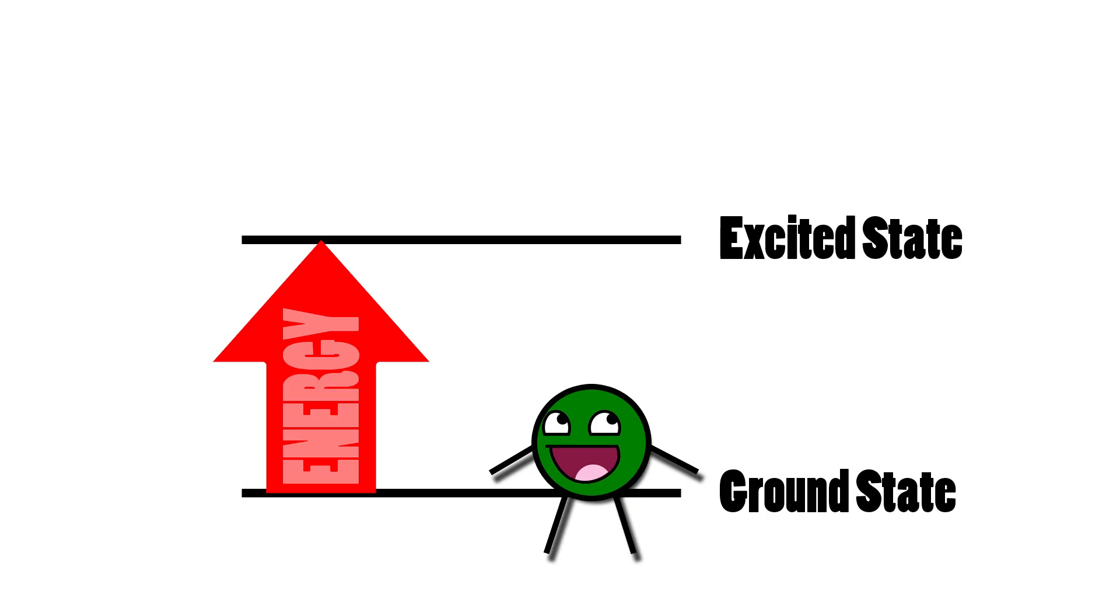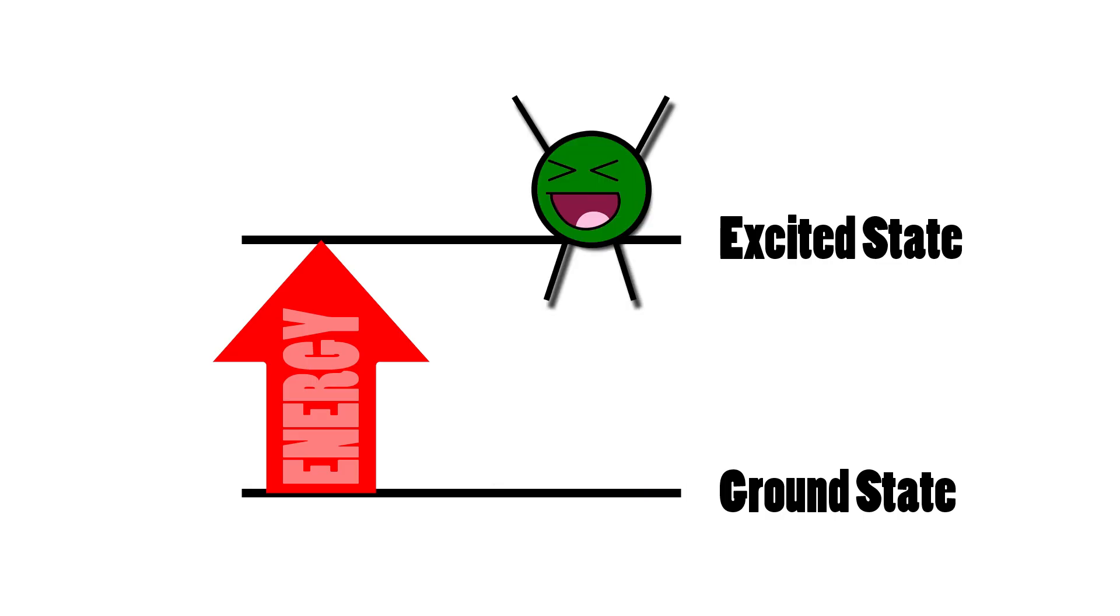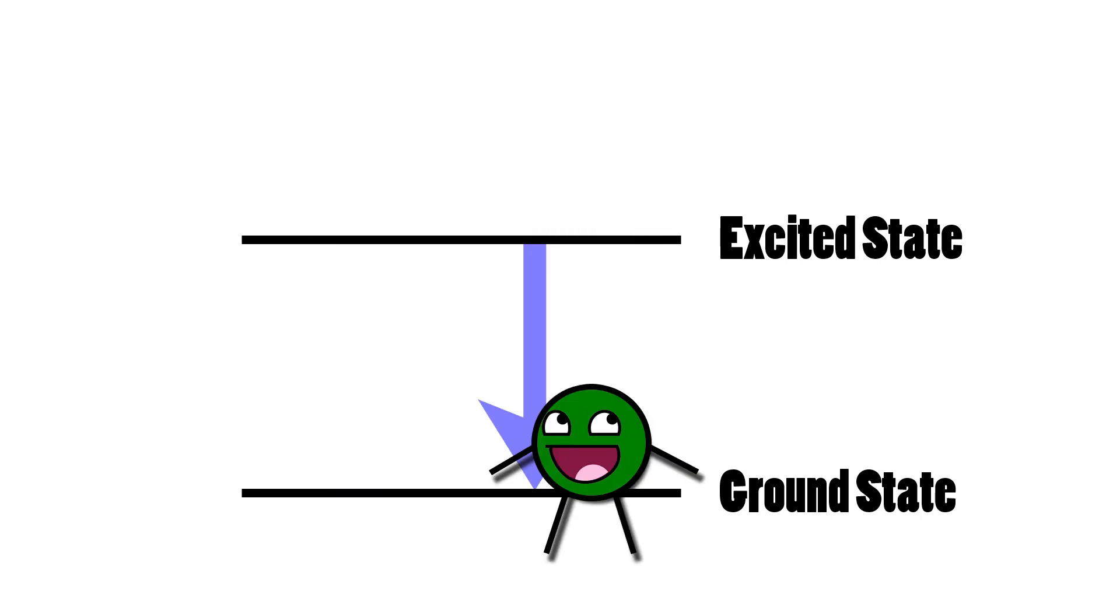The problem to be solved here was how to get enough atoms into an excited state that stimulated emission even happens at all. As I said earlier, nature likes to be in the lowest energy levels. We can pump energy into an atom, get the electron excited, but it quickly jumps back down to the ground state and emits a photon. And that's not stimulated emission. We have a light, but we don't have a laser.